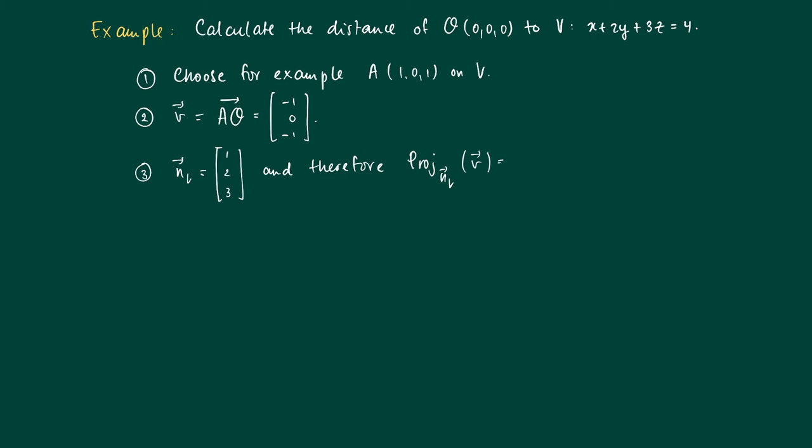We use the standard projection formula, so we take the dot product of the normal times the vector divided by the dot product of the normal times itself. Now we calculated the scalar, and we obtain -2/7 times the vector (1,2,3).